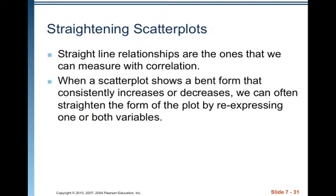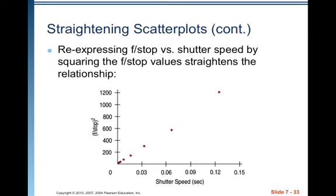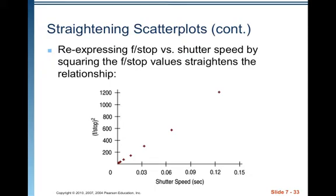Straightening scatter plots. Straight line relationships are the ones we can measure with correlation. When a scatter plot shows a bent form that consistently increases or decreases, we can often straighten the form by re-expressing one or both variables. Here we have a scatter plot of f-stop versus shutter speed showing a bent relationship. Squaring the f-stop values straightens the relationship into a nice line. This matters because the correlation coefficient R then provides a meaningful measure of the strength of that linear relationship, whereas on the bent plot the correlation coefficient would be meaningless.